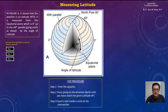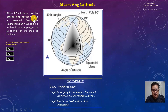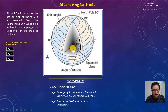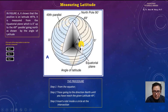Measuring latitude. In figure A, it shows that the position is on the 49 degrees parallel north. It is measured from the equatorial plane, which is zero, up to the 49th parallel going north as shown by the angle of latitude.